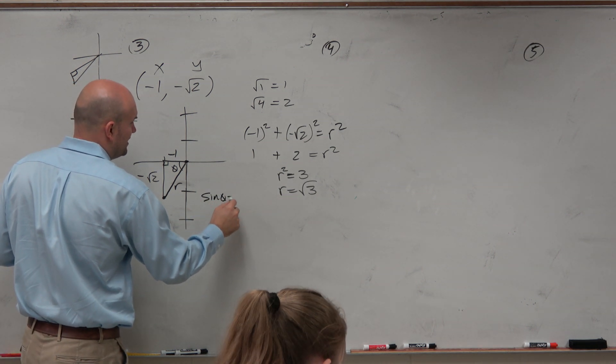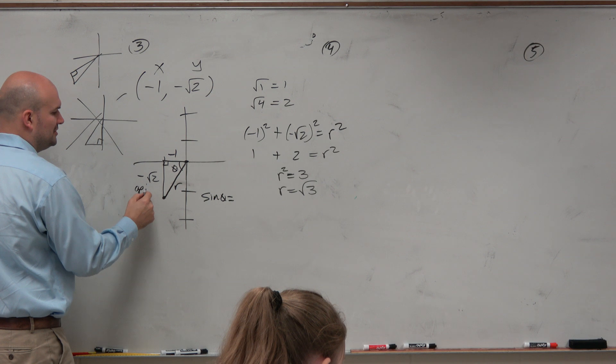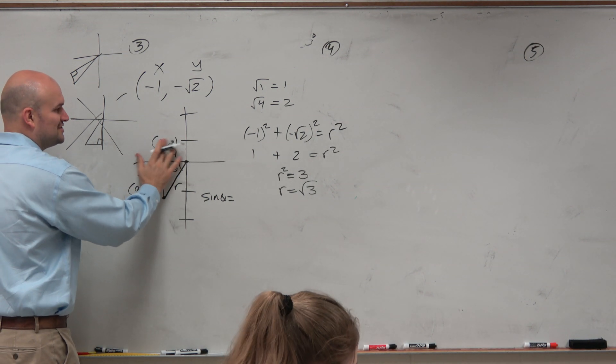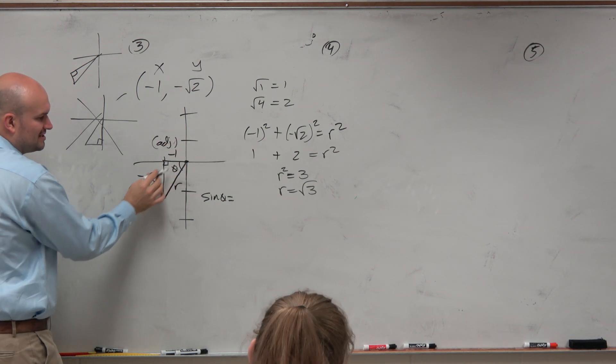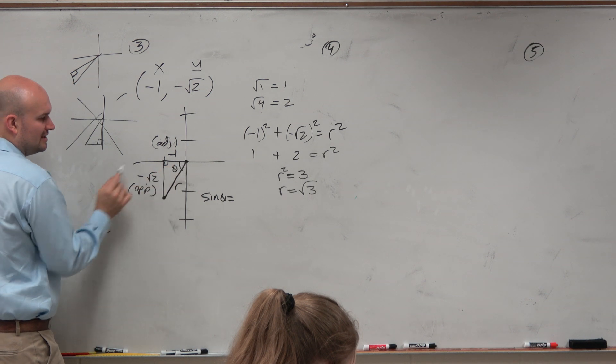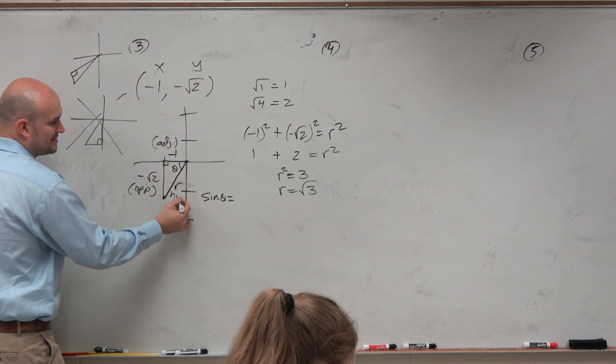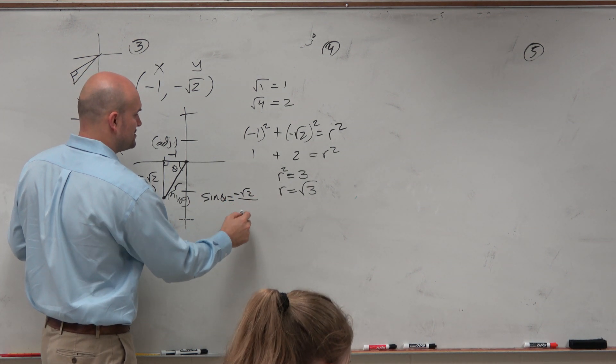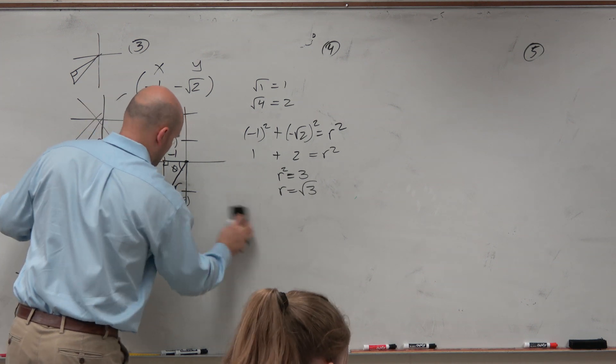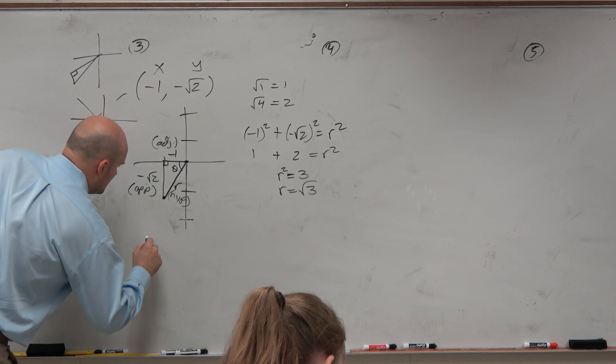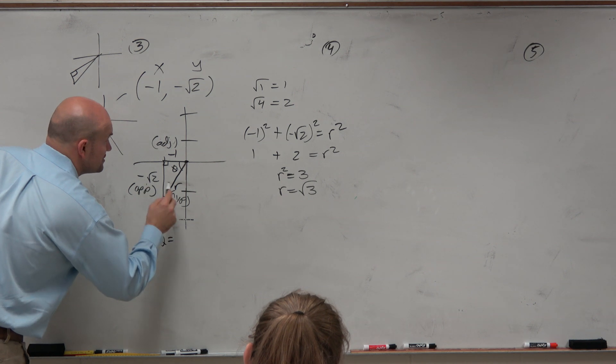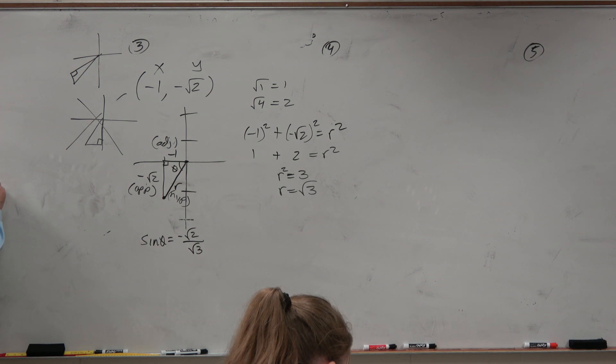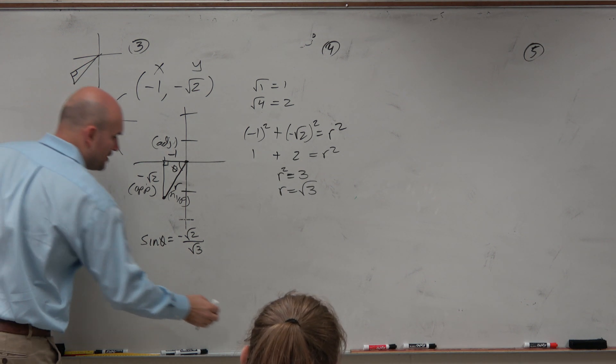So sine of theta, opposite. Let's still label these, just for those of you that are like, I forgot this. Opposite, adjacent, right? Because remember, the opposite side is directly across. Adjacent is between the right angle and the angle. And then this is your hypotenuse. So sine is opposite over hypotenuse. So sine of theta is negative square root of 2 over the square root of 3. We don't want radicals in the denominator if I ask you to simplify. So we'll want to rationalize the denominator.